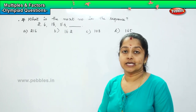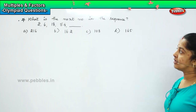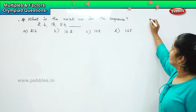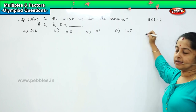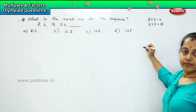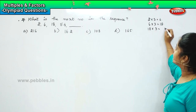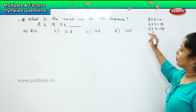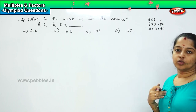Here they are asking us to follow the sequence pattern. So: 2, 6, 18, 54. What is the common thing you can observe here, children? Just try to multiply and see. 2 into 3 equals 6. 6 into 3 equals 18. 18 into 3 is how much? That is 54. Which means that I have to multiply each number by 3 in order to complete the sequence.